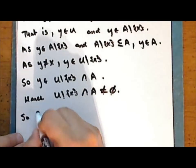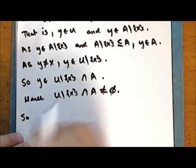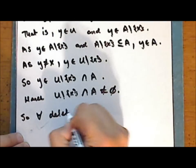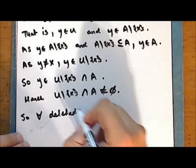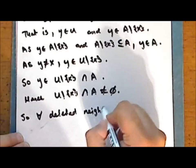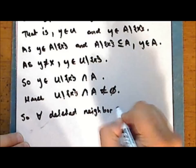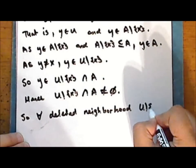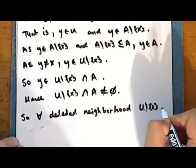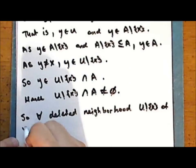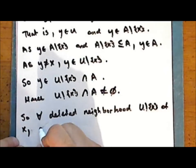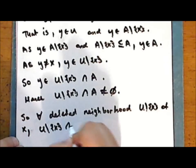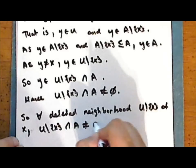And so for every deleted neighborhood U set minus the singleton containing x of the point x, the intersection of this deleted neighborhood with the set A is not empty.